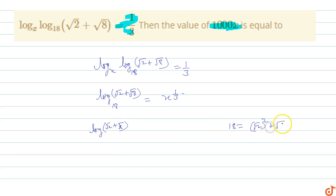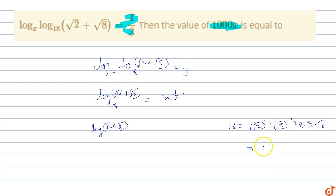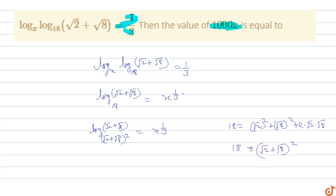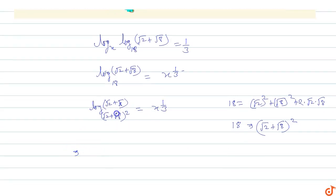Expanding (√2 + √8)²: that gives √2 whole squared plus √8 whole squared plus 2·√2·√8, which is 2 plus 8 plus 2·√16. √16 gives 4, so 4×2 is 8, and 8 plus 10 is 18. So (√2 + √8)² equals 18, which equals x^(1/3).